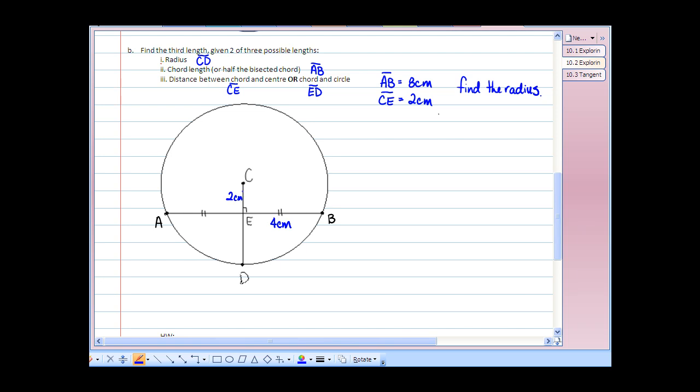So, if I want to find the radius, what I should notice is that if I was to join center C to point B, it not only represents the radius, but it also represents the hypotenuse of right triangle CEB. Thus, we can apply Pythagorean theorem to solve for the radius length BC.